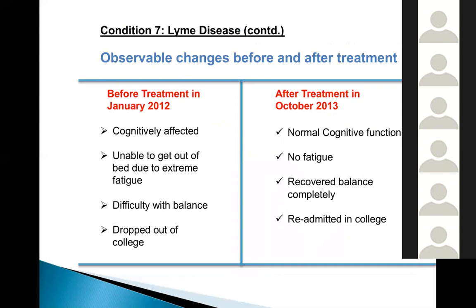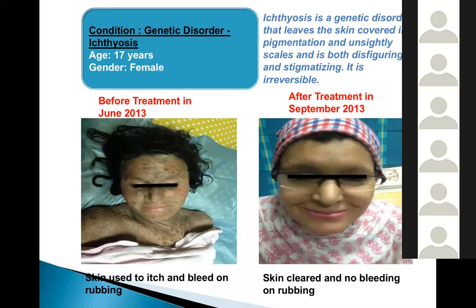It's important to understand that stem cells address quality of life — going from being bedridden to becoming an engineer is a significant outcome. Another case shows a 12-year-old girl with a genetic skin condition so severe that even picking up the skin would cause it to bleed. Over three months of treatment using stem cell bandages and systemic injections, her condition improved dramatically. Her smile tells the story — she is a happy young lady now.